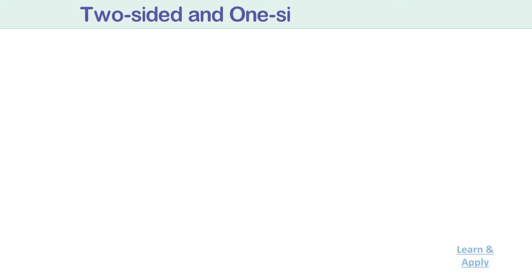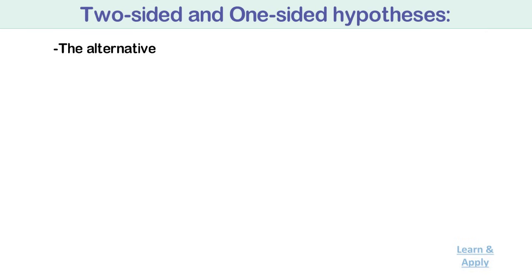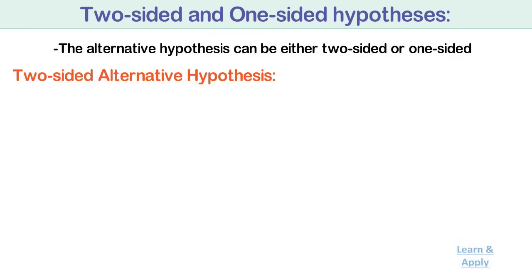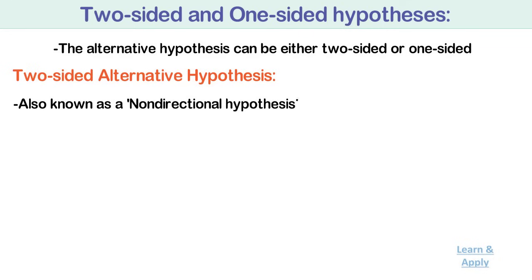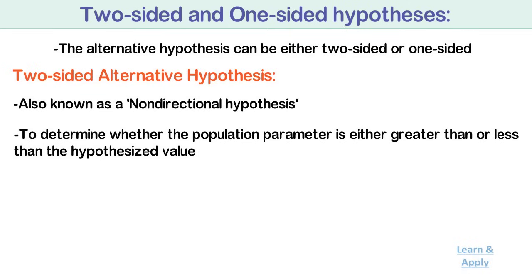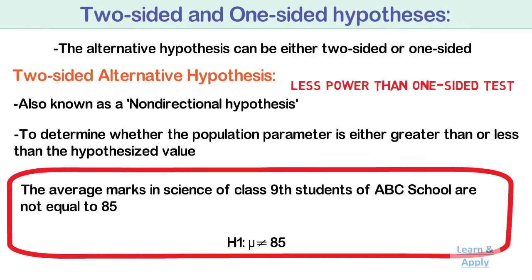Two-sided or one-sided hypothesis: the alternative hypothesis can be either two-sided or one-sided. Use a two-sided alternative hypothesis, also known as a non-directional hypothesis, to determine whether the population parameter is either greater than or less than the hypothesized value. A two-sided test can detect when the population parameter differs in either direction but has less power than the one-sided test. The example we saw above uses the two-sided hypothesis.